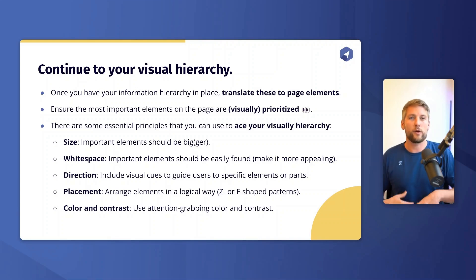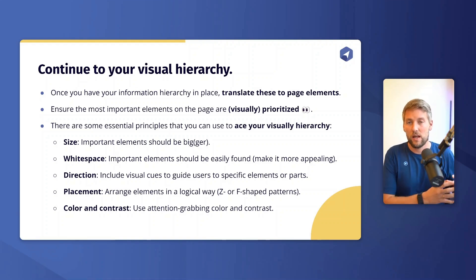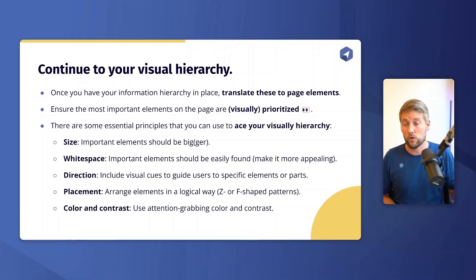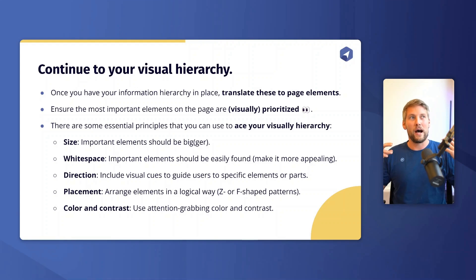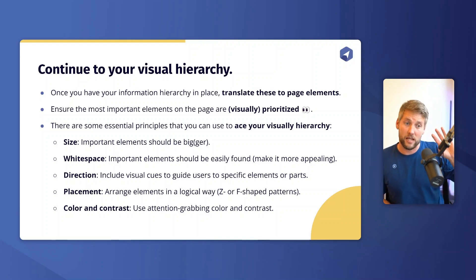You can also use white space as a visual hierarchy element. Important elements should be easy to find and appealing, so make sure there's enough white space around key elements like your call to action, form, imagery, and testimonials. White space gives important elements the room they need and makes them more appealing. Next is direction — include visual cues to guide users to specific elements, like a background color with a downward arrow or imagery of people looking toward a specific section.